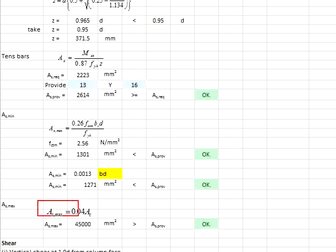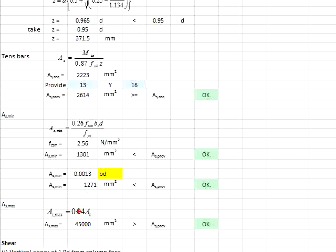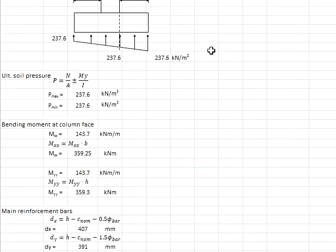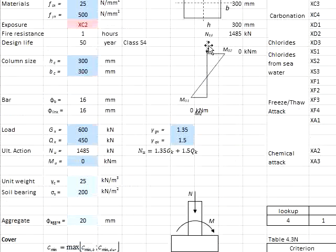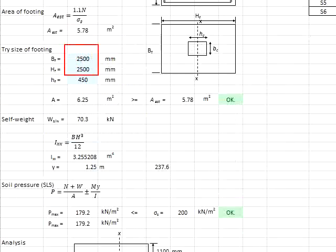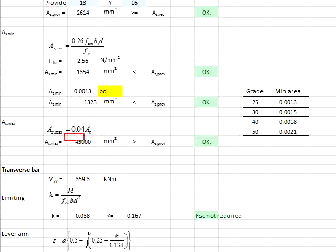You may also check for the maximum amount of reinforcement bar, which is 0.04 times the area of the concrete. The area of concrete is calculated using B and H, where B is 2500 mm and H is 450 mm. Your maximum area of reinforcement is much greater than that provided, so it is considered acceptable.